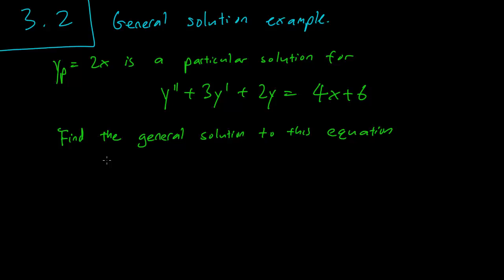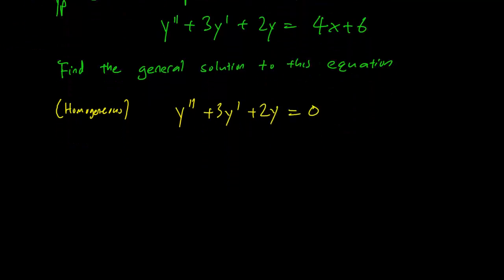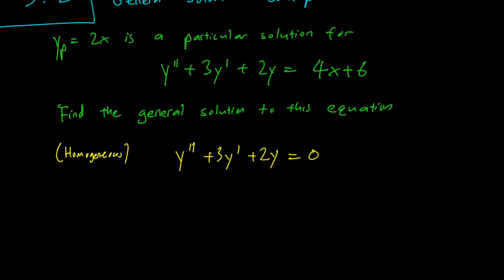So the trick is to check the homogeneous equation. The homogeneous equation is going to be y double prime plus 3y prime plus 2y equals 0, so we just get rid of the x term here. So we have this instead, and we have to find the general solution to this homogeneous equation.